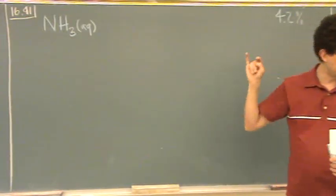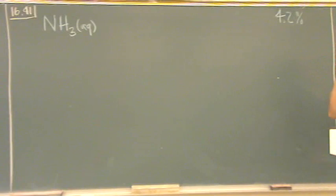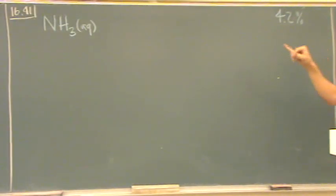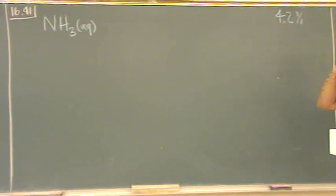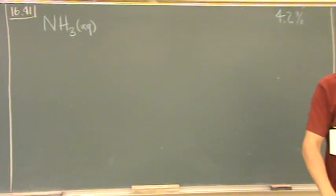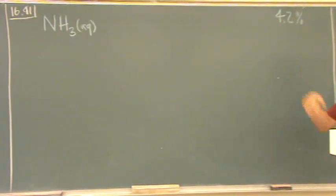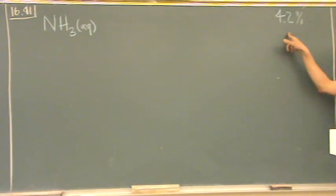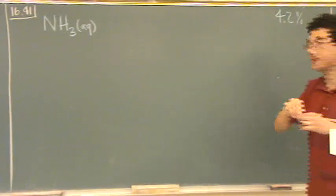So, 1641 from the book, your problem might be different if you're doing it with the homework, but 4.2% ionized. That means that it's basically ability to act as a base. So in this case, in 41, it's acting as a base, it's receiving the proton. What percent of it actually does that is what this means. The percent that actually goes to the reaction I'm going to write down.